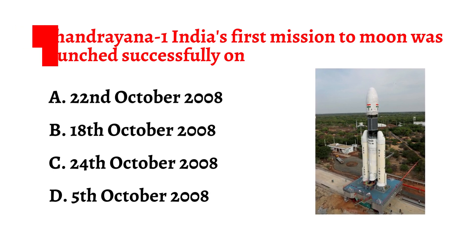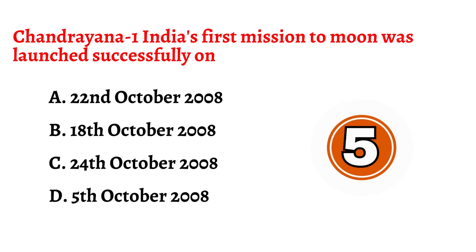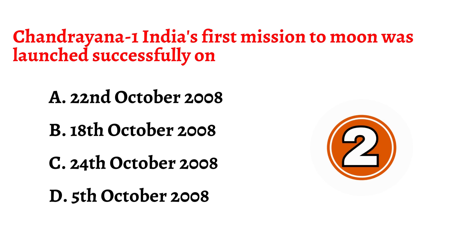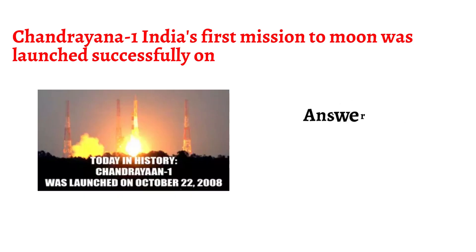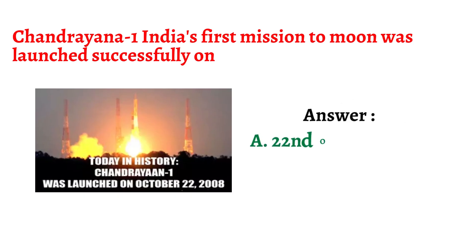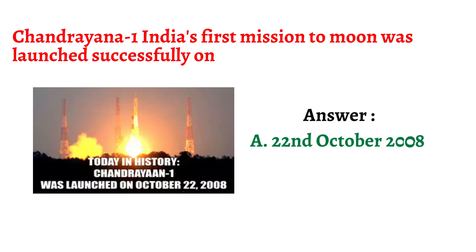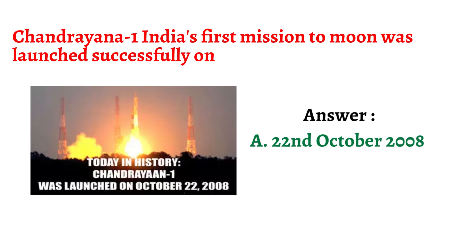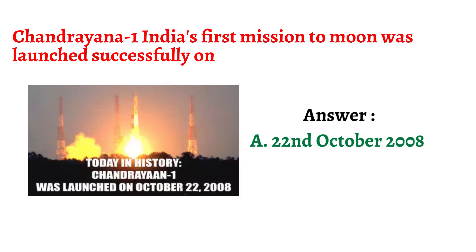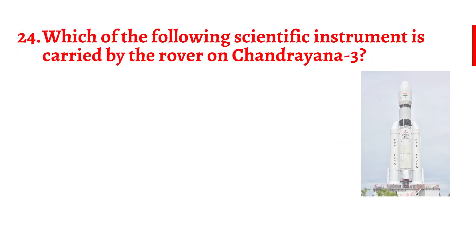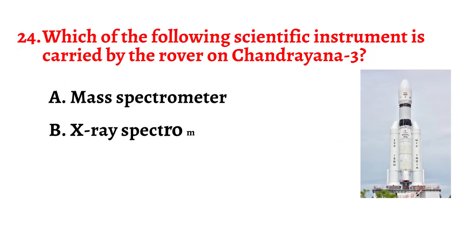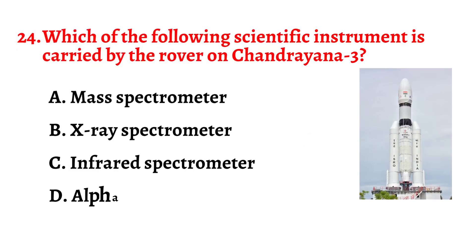Question number twenty-three: Chandrayaan 1, India's first mission to the Moon, was launched successfully on? The correct answer is option A: 22nd October 2008.